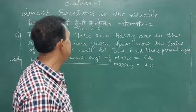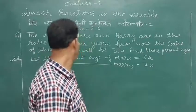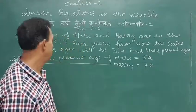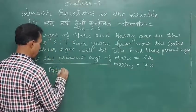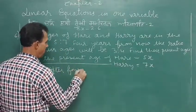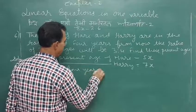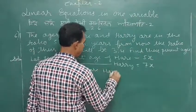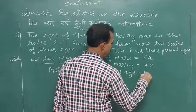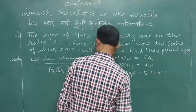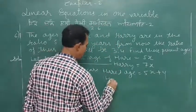But after four years from now, so five x plus four years. After four years, Hari's age can be five x plus four. Harry will be seven x plus four.